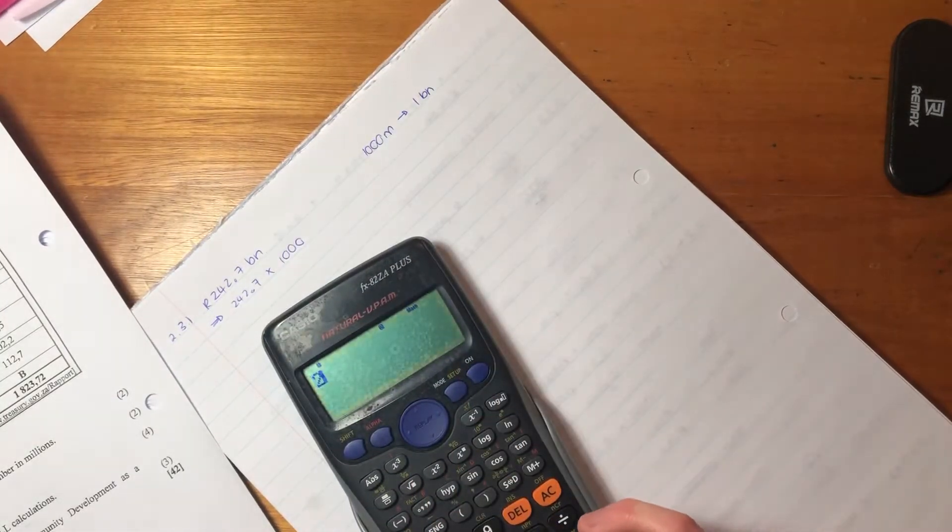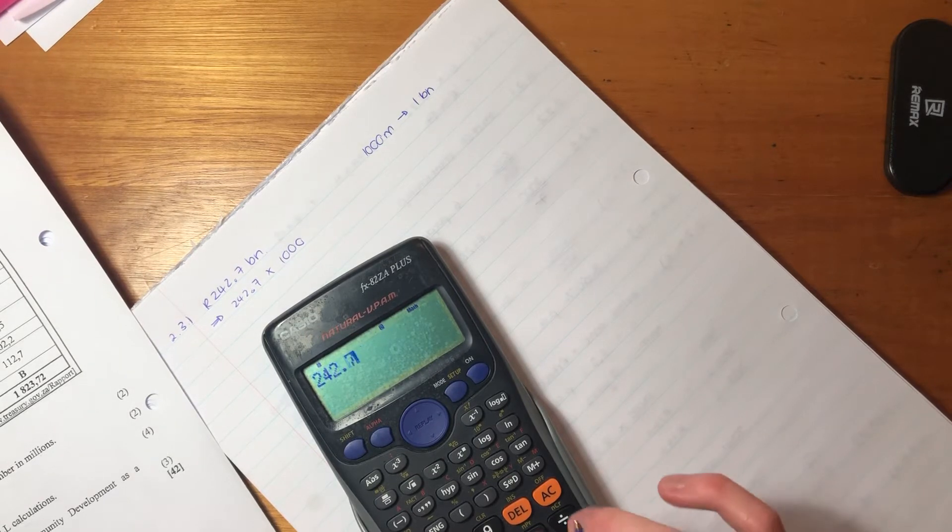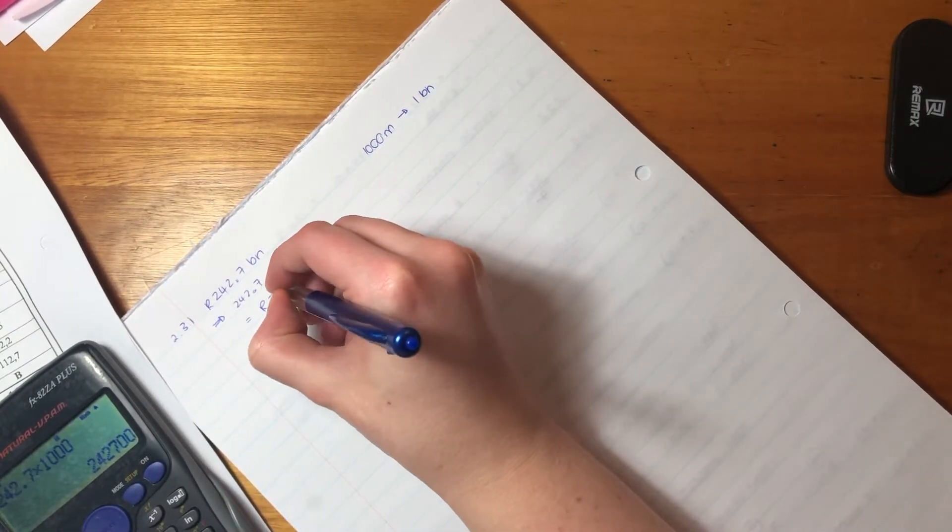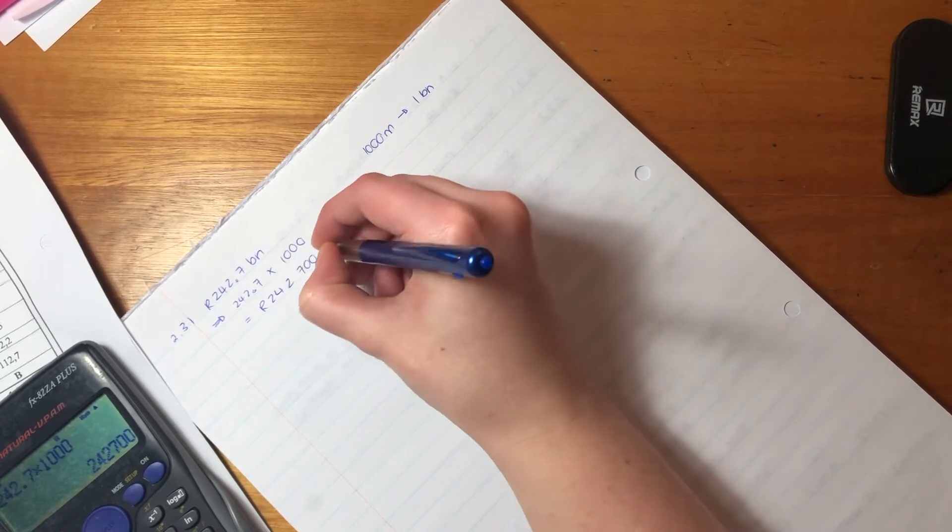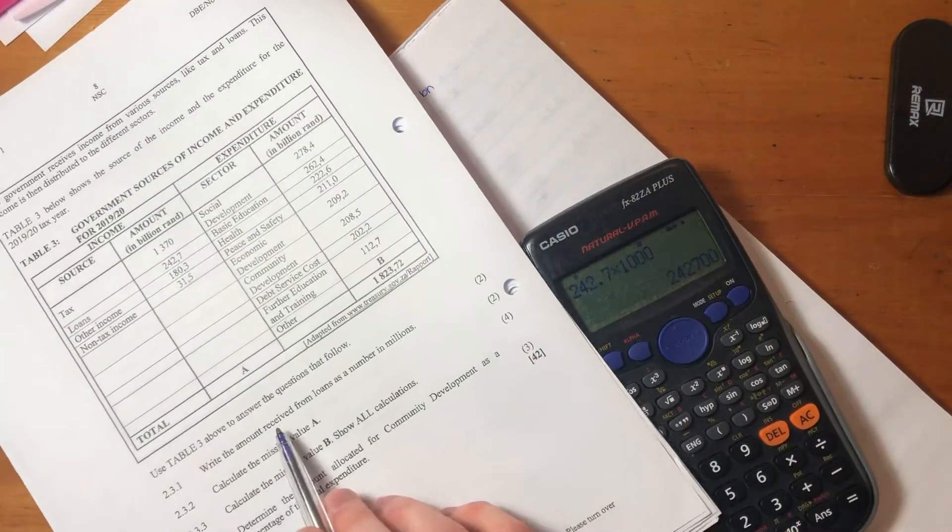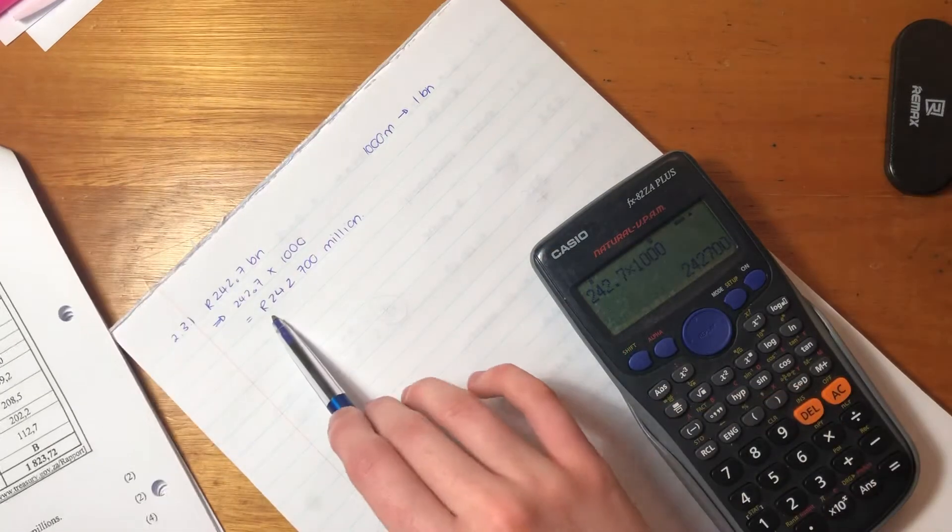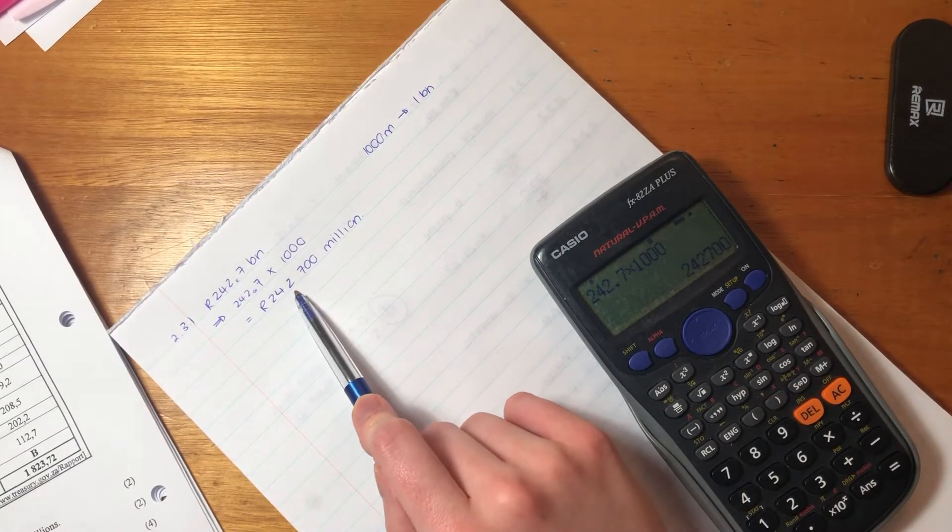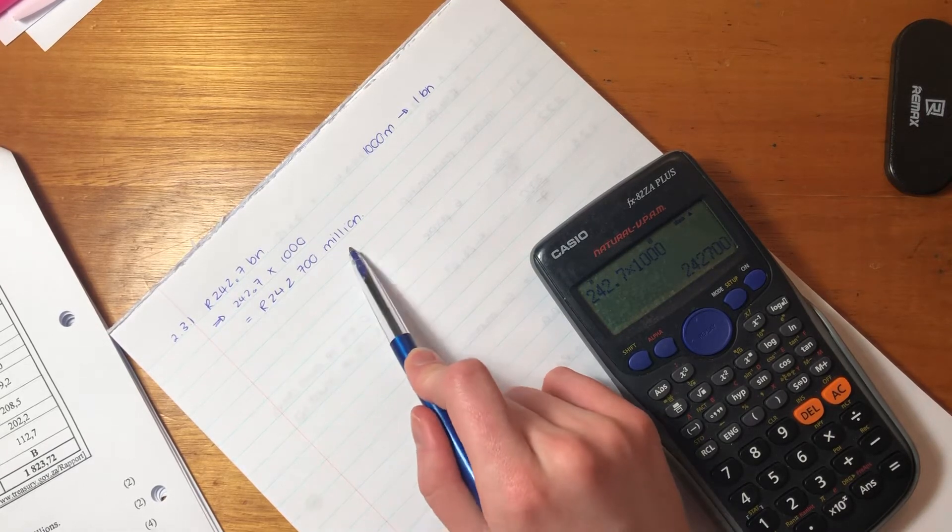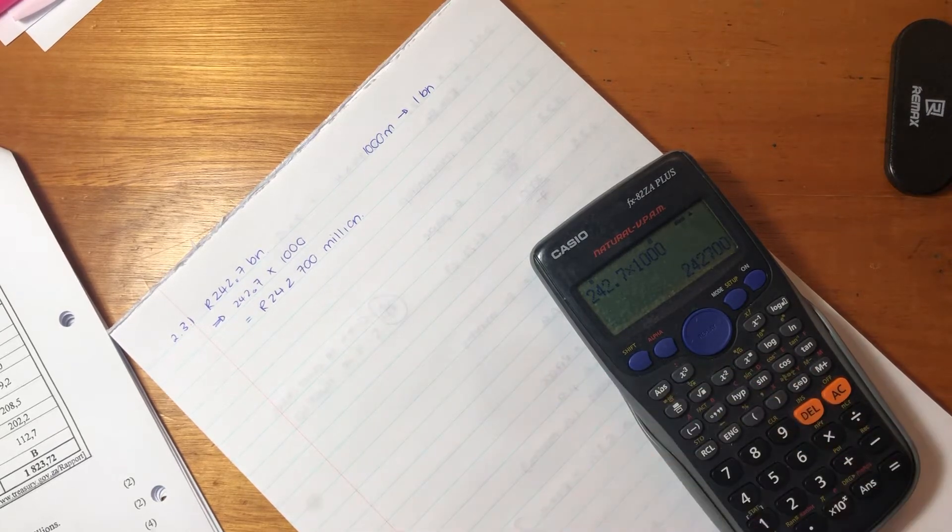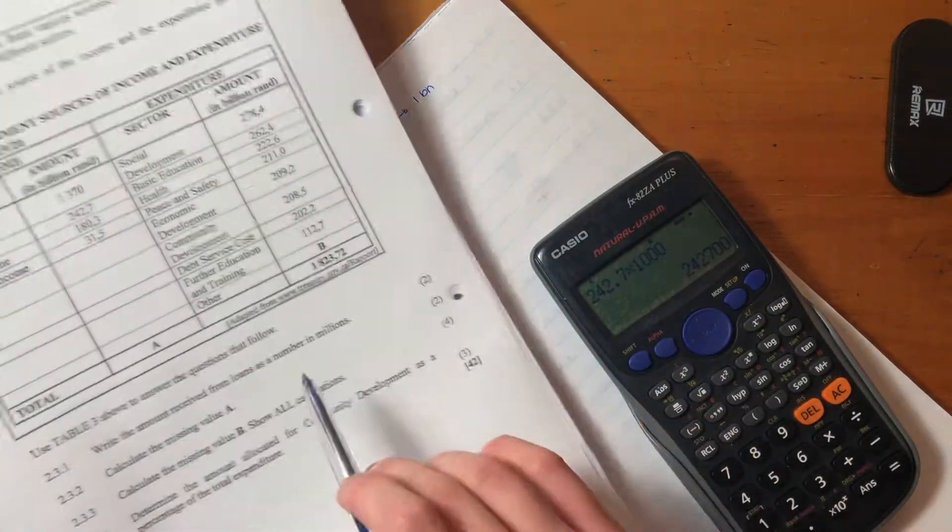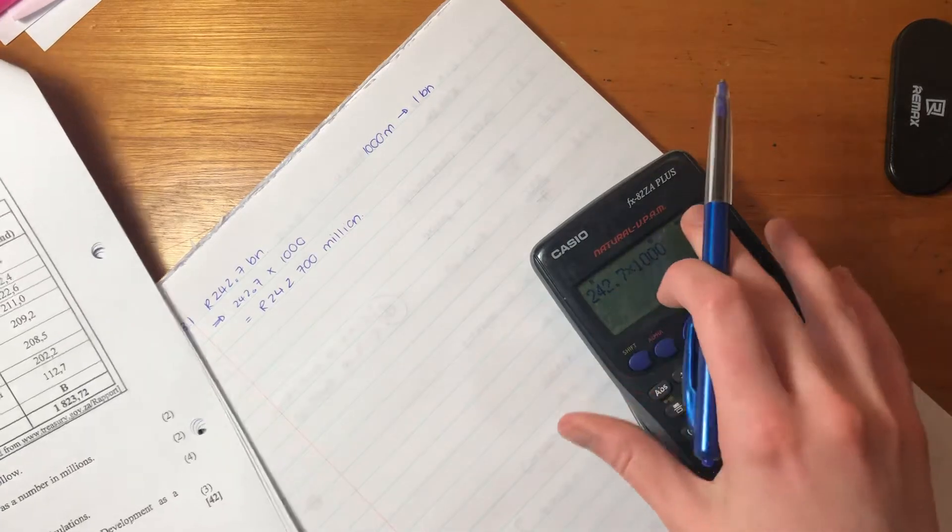You say 242.7 times 1000, and that gives us 242,700 million. It says write the amount received from loans as a number in millions. We don't have to write it out in words. We just need to write it in millions. That's what they said, as a number in millions. So we've written it out in millions, we'd have got all our marks.